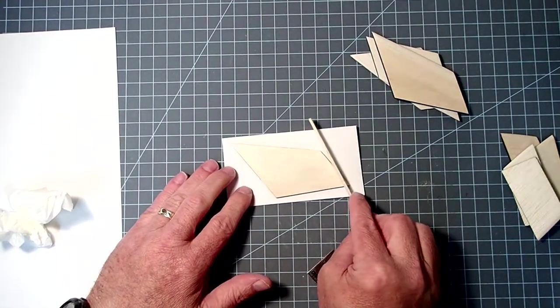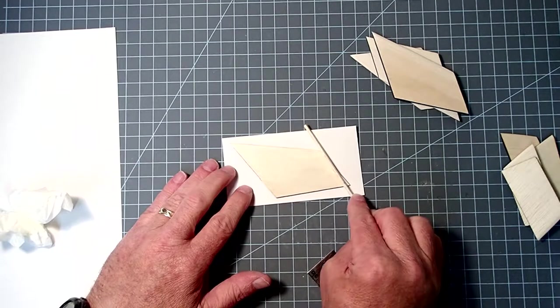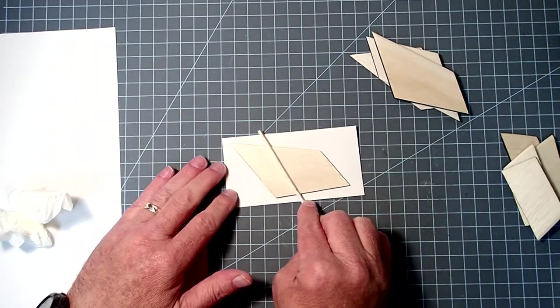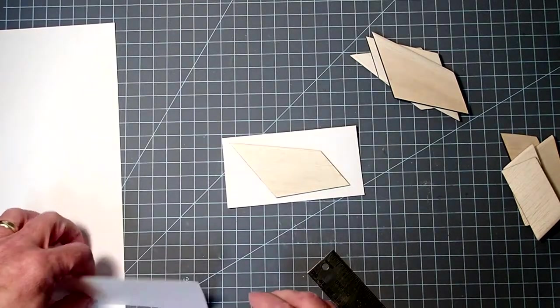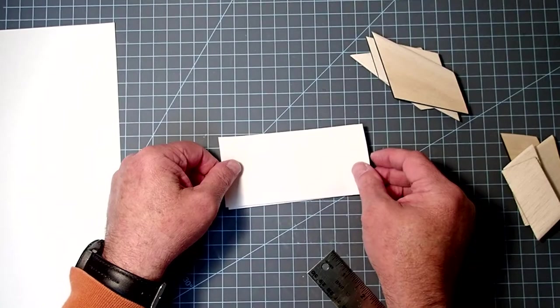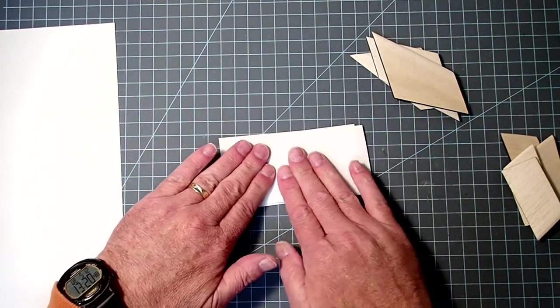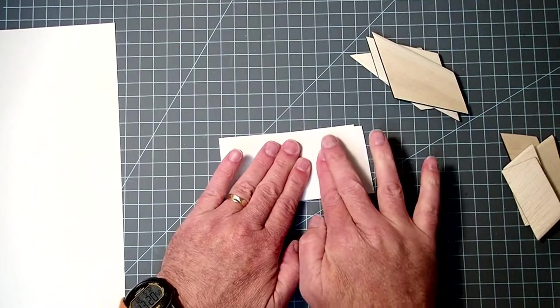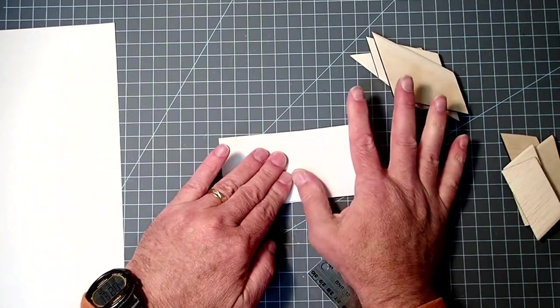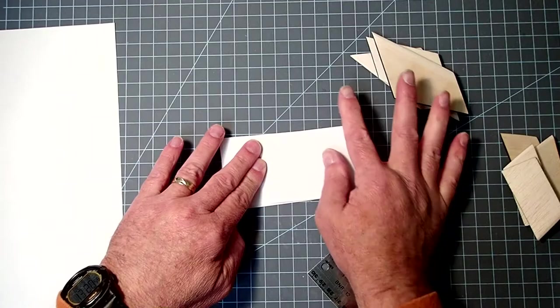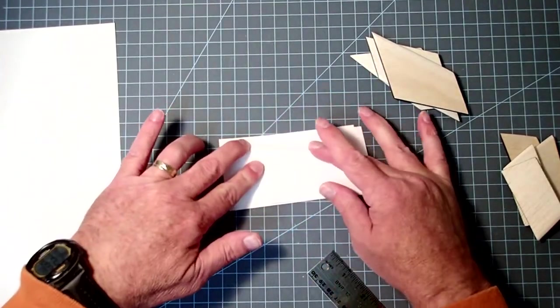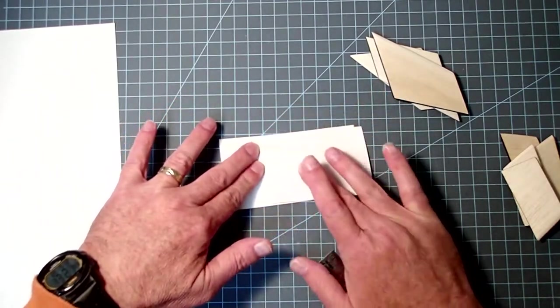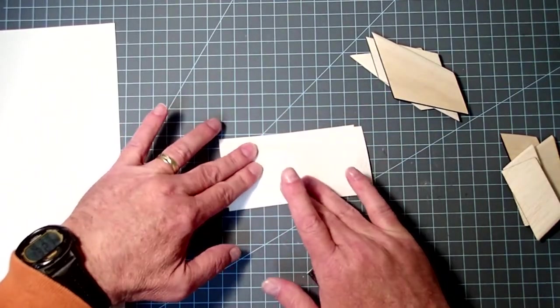And again, I'm going to take my little stick here, squeegee off most of that, and then take my other piece of paper here, and put that over as well. And again, make sure your glue finger is clean when you do this.